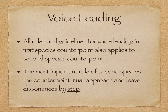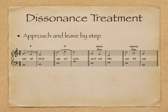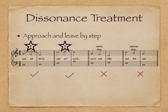Voice leading in second species is very similar to that of first species with a couple more rules. Everything you learned in first species also applies to second species. In addition, second species has an important rule about the treatment of dissonance: the counterpoint must approach and leave dissonances by step. Dissonances are unrestful and must be connected to consonances, similar to how active scale degrees must lead to stable scale degrees. This means we will use passing and neighbor motions to achieve that stepwise motion. The two examples on the right have an unresolved dissonance because the minor ninth is left by a leap, and an unprepared dissonance because the perfect fourth is approached by a leap. These are incorrect voice leading techniques.